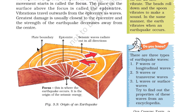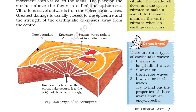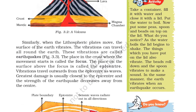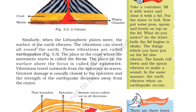You can also see the epicenter and the plate boundary in the diagram — it shows the origin of an earthquake. In an activity: take a container, fill it with water and close it with a lid. Put the water to boil, then put some peas, spoons, and beads on top of the lid. As the water boils, the lid begins to shake, the things on the lid vibrate, the beads roll down, and the spoon vibrates to make a sound.